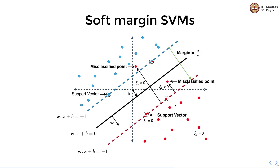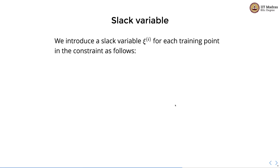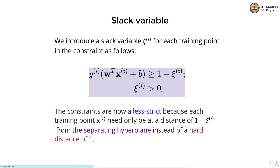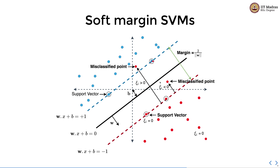What we do is add slack variables xi for every point. There is a slack variable xi for each training point with the following constraint. Our original constraint on correctly classified points was yi times (w transpose xi + b) >= 1. We modify that constraint by subtracting xi from the right-hand side, with xi >= 0. This constraint is now less strict because each training point need only be a distance of 1 minus xi from the separating hyperplane, instead of a hard margin distance of 1.